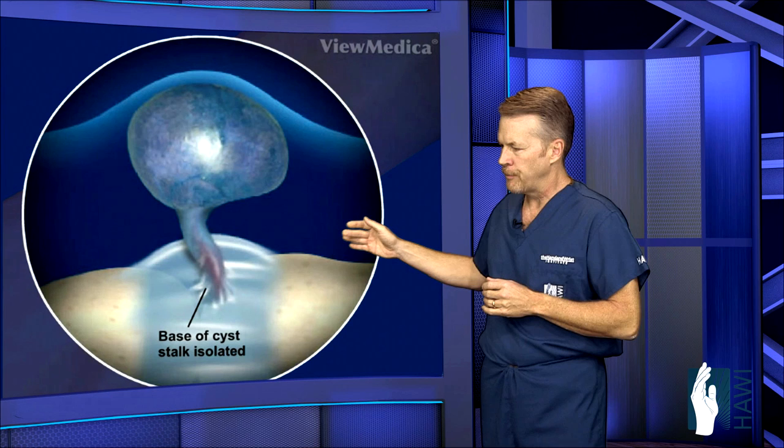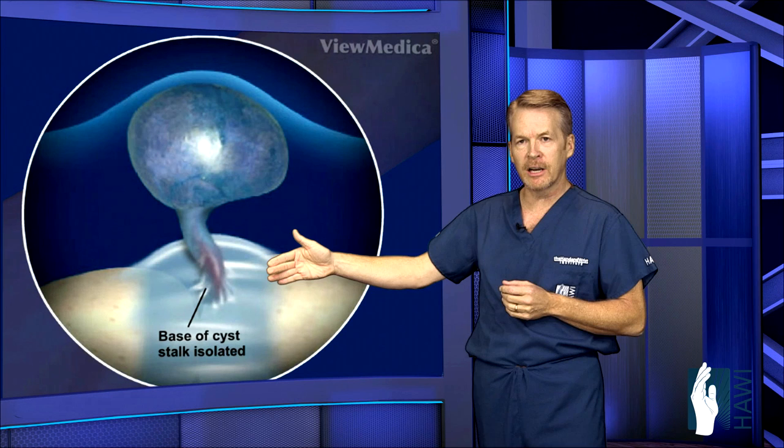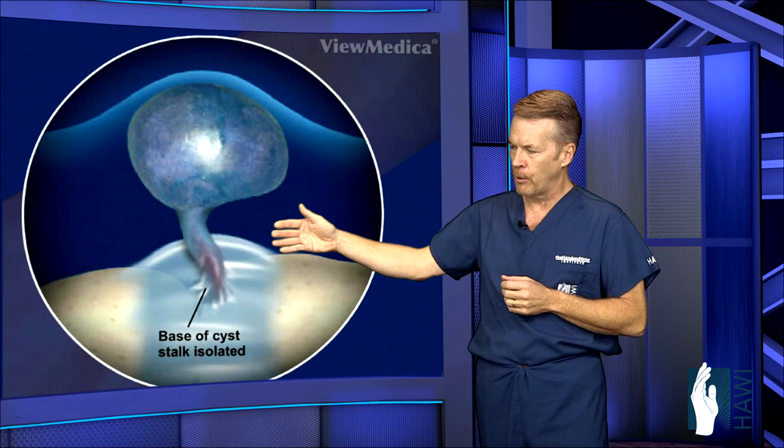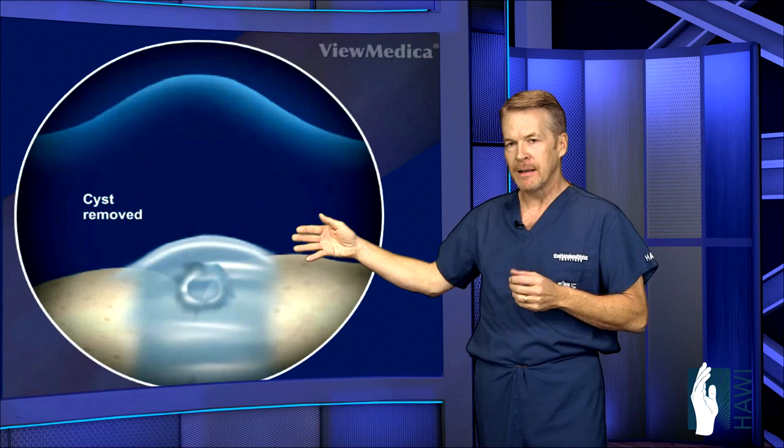If you look here, this is an animated picture of really what's going on. This is a sac coming out with a root right out of the main ligament in the wrist, usually between the scaphoid and the lunate bones, called the scapholunate ligament. We go in and remove this cyst, cutting around the base of it and taking the cyst out — as you can see it's missing here.